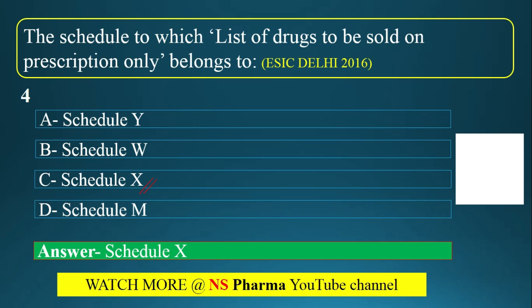Schedule Y is related to clinical trials. Schedule W is the list of drugs marketed under generic names — generic drugs. Schedule M is related to GMP (Good Manufacturing Practice) requirements of factory premises.